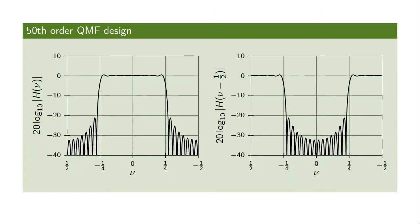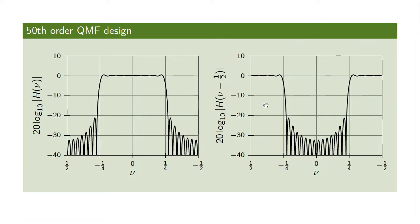To illustrate this frequency domain correspondence, consider a particular QMF design with a 50th order base filter — a low-pass filter with a good transition between pass band and stop band and relatively low ripples. If we rotate this filter by half a period in the frequency domain, using the fact that the discrete-time Fourier transform is periodic with period one, a low-pass filter transfers into a high-pass filter for H1 and G1. The only difference between H1 and G1 is a sign change, which does not affect the magnitude of the transfer function.